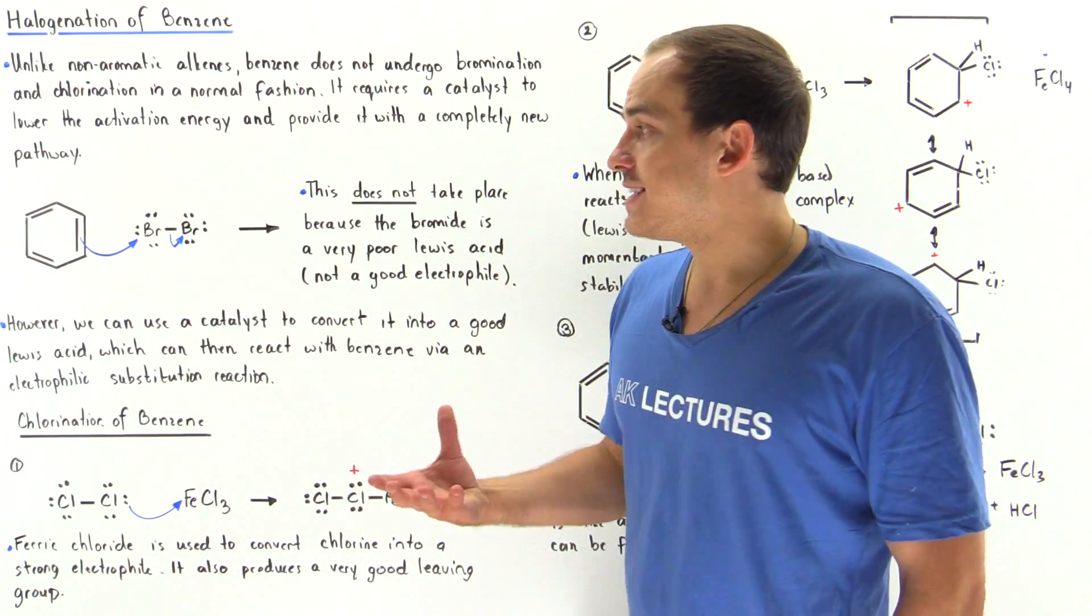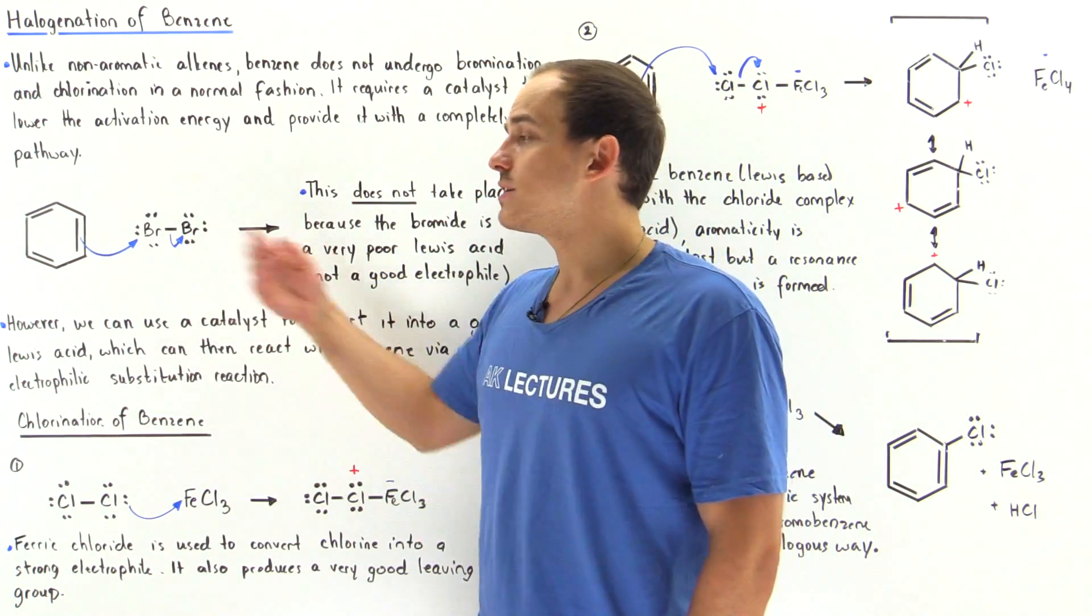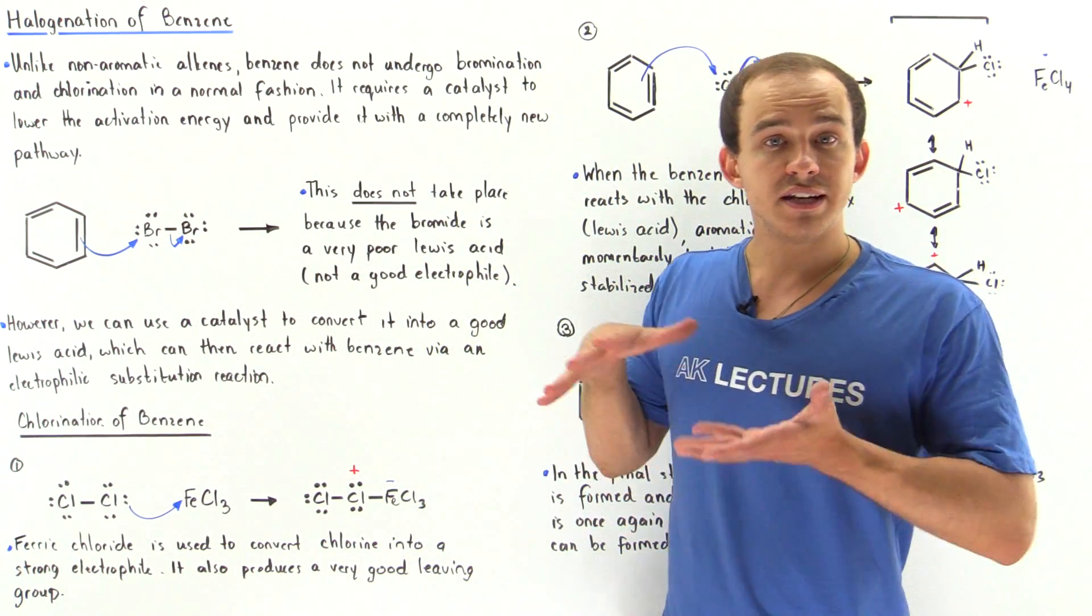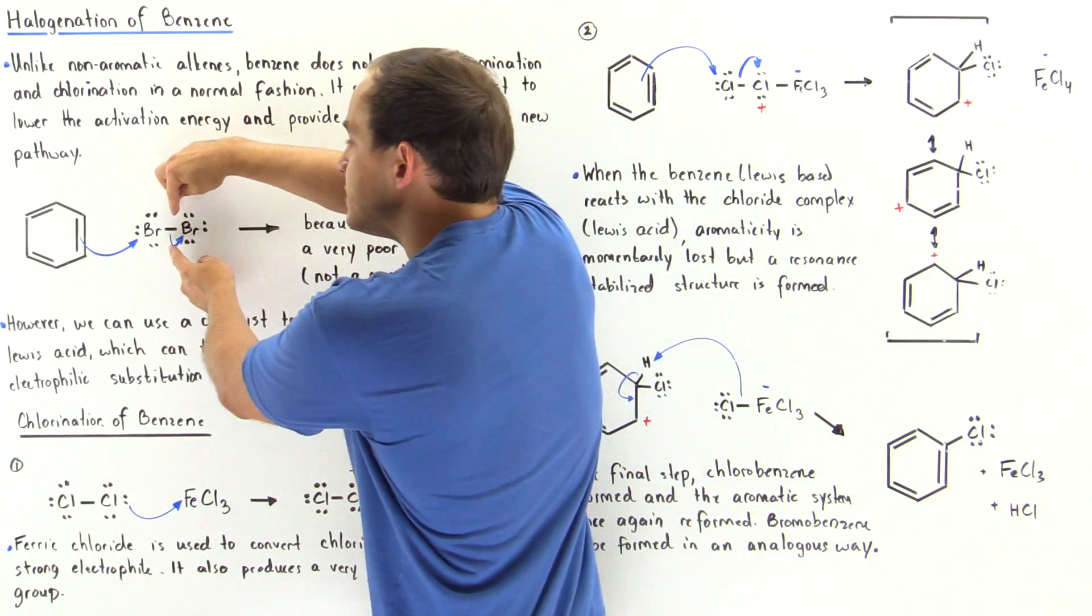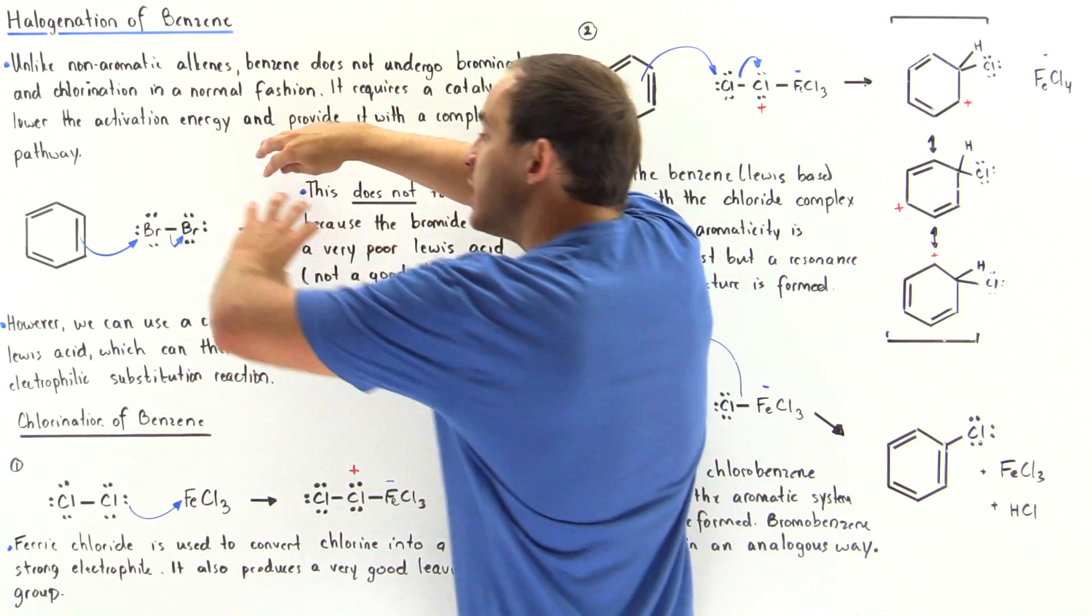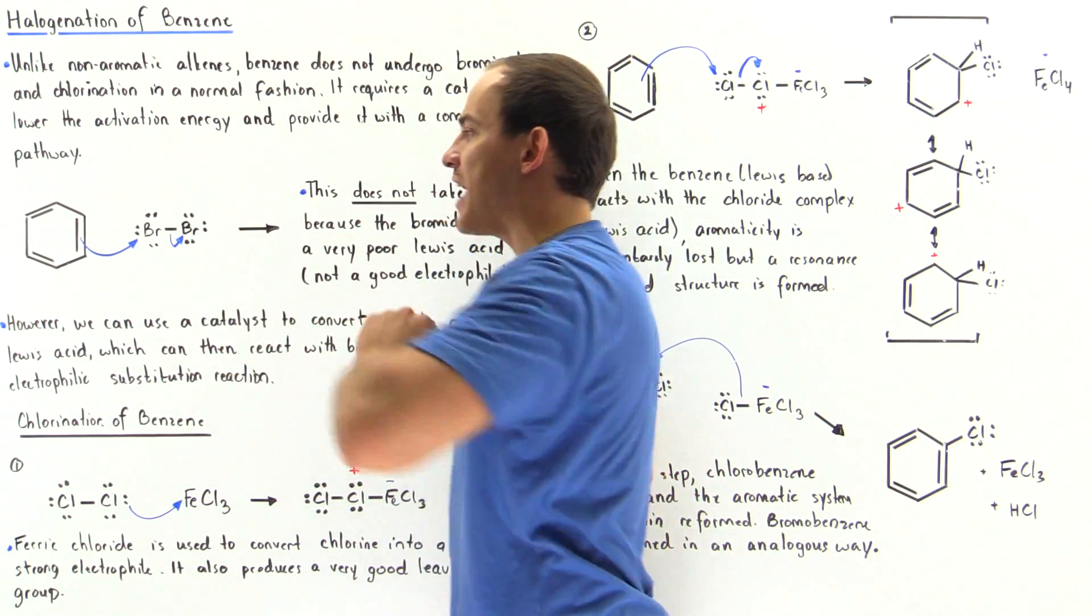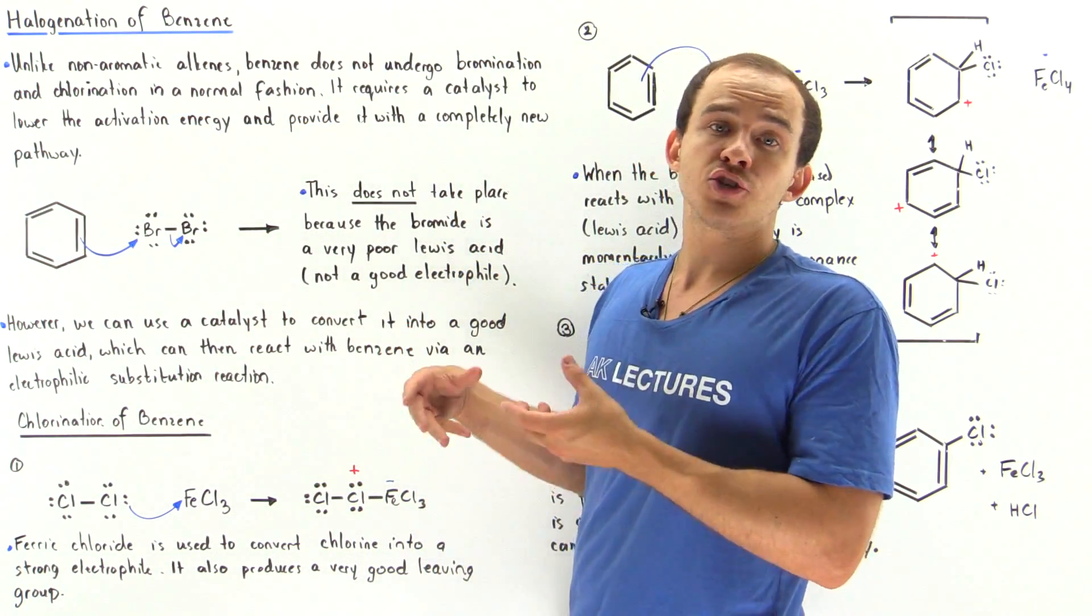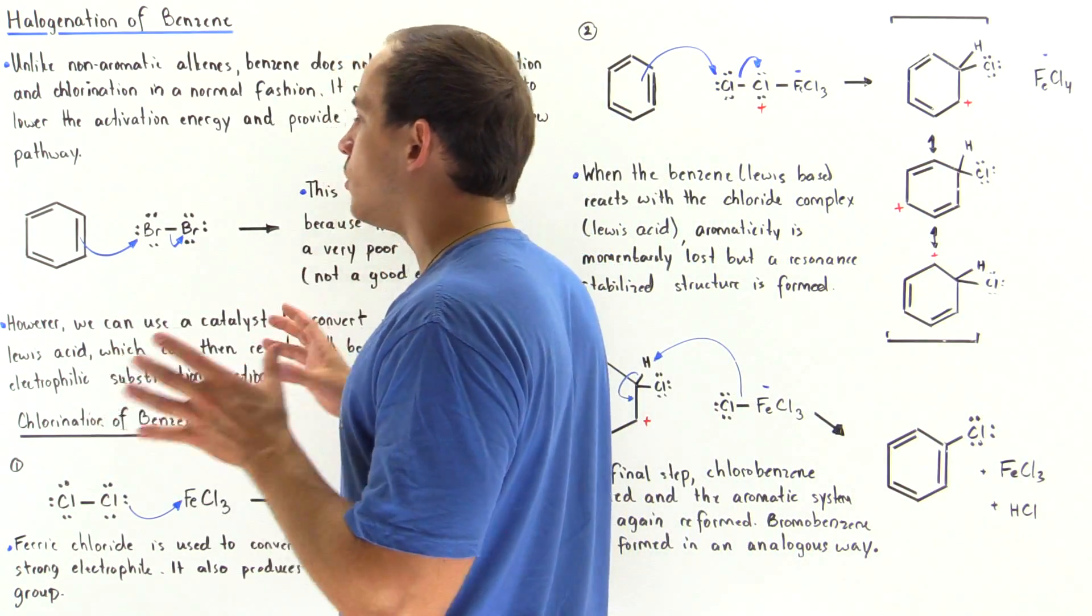If we take our benzene molecule and mix it with some type of diatomic halogen, for example bromine, no reaction actually takes place. The reason is the activation energy is simply too high. This sigma bond between the two bromine atoms is simply too strong, and that means this molecule is a very bad Lewis acid. So if this is a bad Lewis acid and our Lewis base reacts with it, no reaction actually takes place, or at least the reaction does not take place at a reasonable rate.